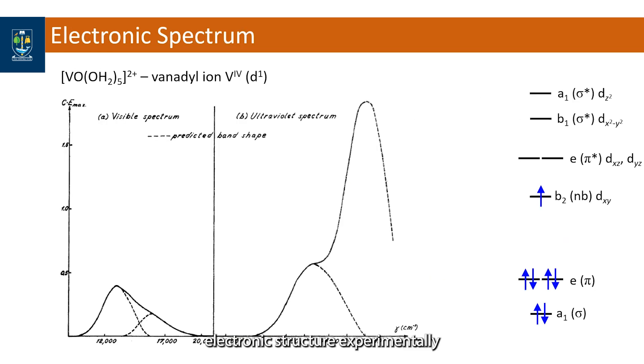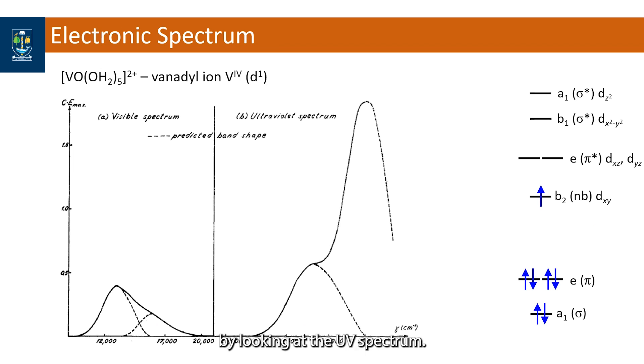We can see this electronic structure experimentally by looking at the UV-vis spectrum. This is the original spectrum recorded in the 1960s where one had to manually change the lamp from the visible wavelengths to the ultraviolet ones and then stick the two parts of the spectrum together. The MO scheme is shown on the right and we use it to assign the bands in the spectrum represented by the dashed lines underneath showing the peaks.